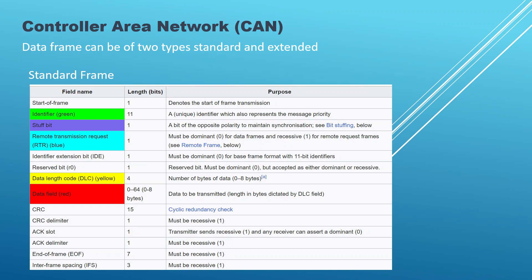If the RTR bit is dominant, the message is a data frame, and if it is recessive, the message is a remote frame. Fourth, Control field: a bit that determines the type of message. It can either be a data frame, 0, or a remote frame, 1. Fifth, Data Length Code, DLC: this is the length of the data field, expressed in the number of bytes. Sixth, Data field: this is where the actual message data is stored. The length of the data field is determined by the DLC value.